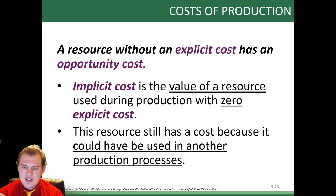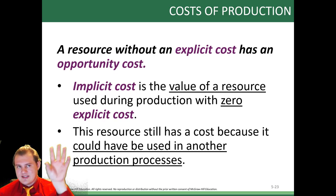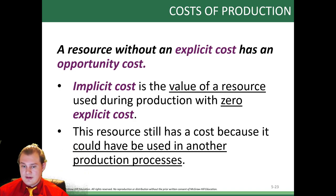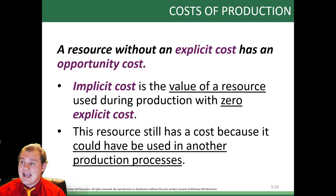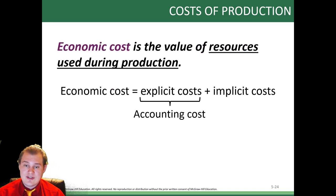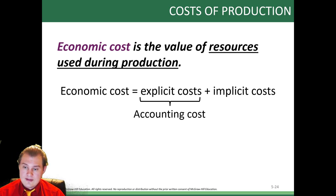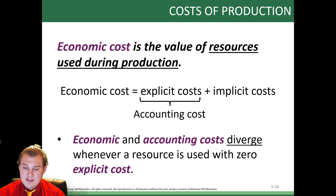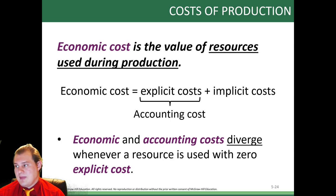A resource still has a cost because it could have been used in another production process. Going back to the restaurant example: the owners are making $300 net after all costs. They could shut it all down and work full-time for someone else and have $2,000 coming in. That's the opportunity cost — that's an economic cost. Economic cost equals explicit costs plus implicit costs. You have to add both up. Accounting costs and economic costs diverge whenever a resource is used with zero explicit cost — something that doesn't appear on paper but obviously has value, like an owner not paying themselves.